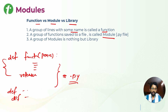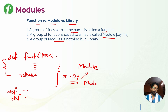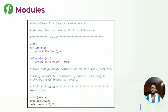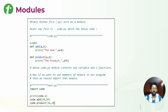A group of modules is nothing but a library. All these .py files are modules - we have module 1, module 2, and so on - and together they form a library. Module 1 and module 2 have different functions inside them and together they're called a library. A function has n number of lines. So every .py file acts as a module.